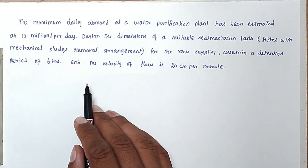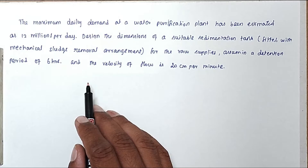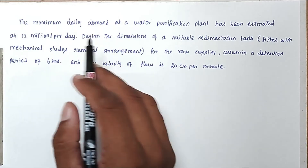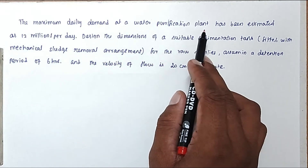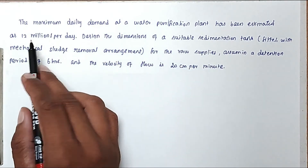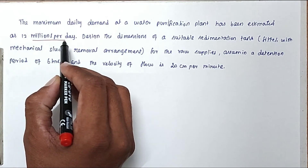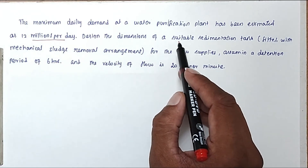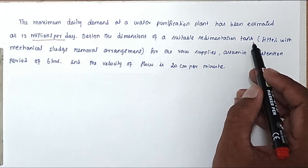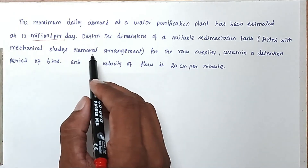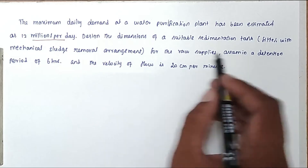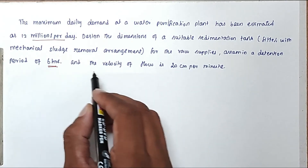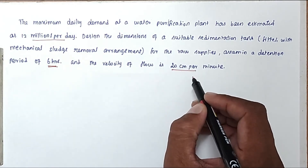Hello friends, welcome to Student Engineering Exam. Today we're going to see a problem related to wastewater engineering, in the topic of sedimentation tanks. The question is: the maximum daily demand at the water purification plant has been estimated as 12 million liters per day. Design the dimensions of a suitable sedimentation tank fitted with a mechanical sludge removal arrangement for the raw supplies. Assume the detention period is 6 hours and the velocity of flow is 20 centimeters per minute.